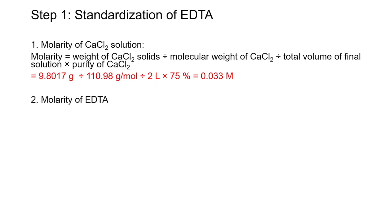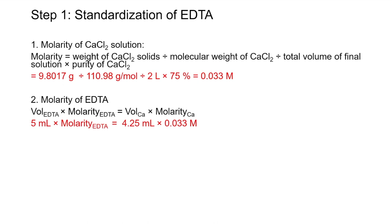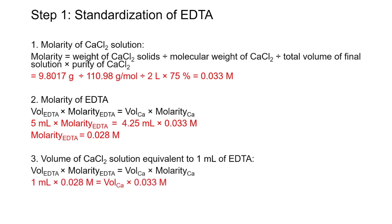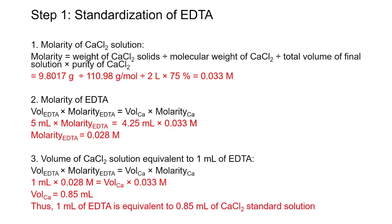Then you can determine the molarity of EDTA used. The volume of EDTA used is 5 milliliters and the titrated volume of calcium chloride solution is 4.25 milliliters, while its exact molarity was calculated to be 0.033. Thus the molarity of EDTA is 0.028. You just need to calculate how much calcium chloride solution is equivalent to 1 milliliter of EDTA, and the result is 0.85 milliliters. Don't forget to use the exact molarity of calcium chloride in this step as well.